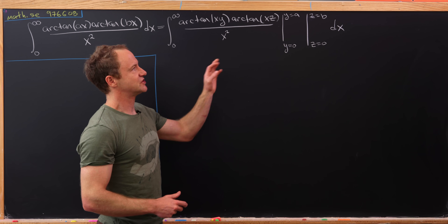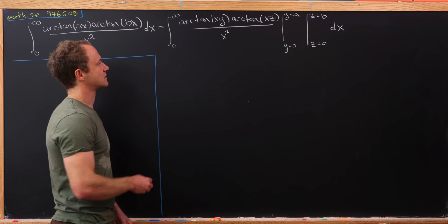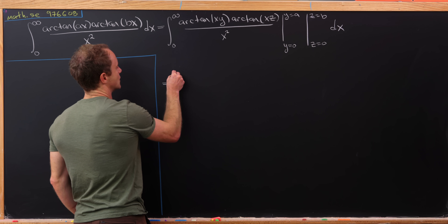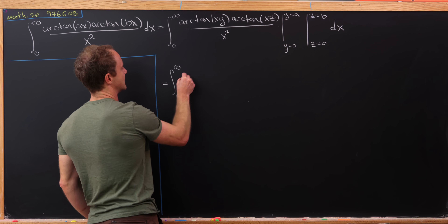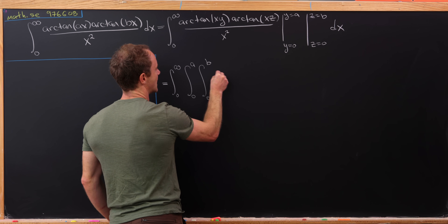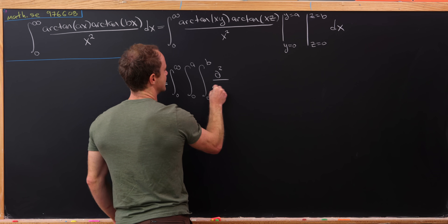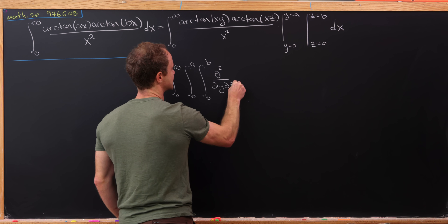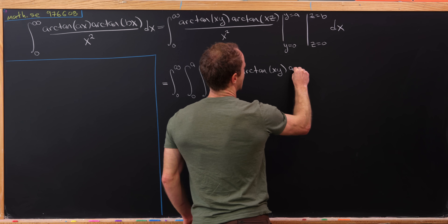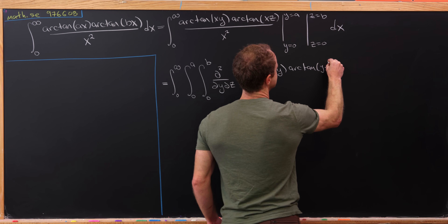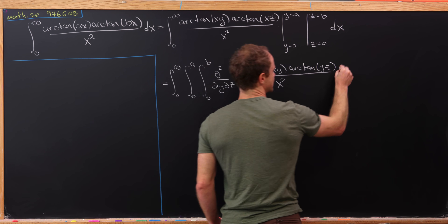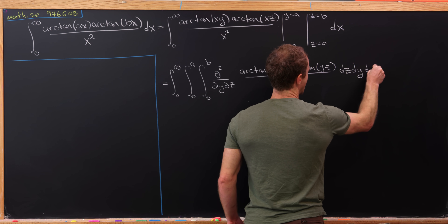So in particular, it's going to look something like this. We've got the integral from 0 up to infinity, then the integral from 0 up to a, and then the integral from 0 up to b, of the second derivative — one with respect to y and one with respect to z — of arctan of xy times arctan of xz all over x squared. This will be in the order of dz dy dx.